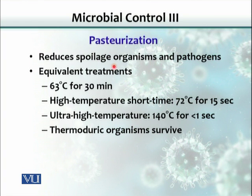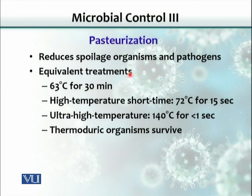Boiling kills most organisms present in a medium but does not eliminate all of them. Pasteurization is another moist heat method where we target organisms that cause food spoilage. Milk is pasteurized most commonly, and wine, beer, and fruit juices can also be pasteurized.